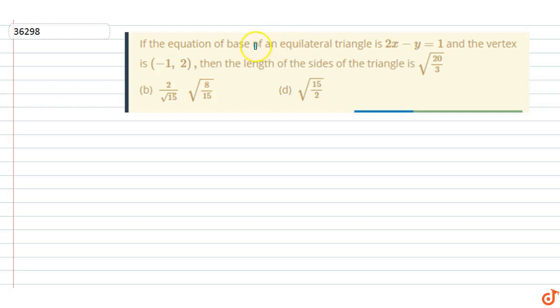The question given is: if the equation of the base of an equilateral triangle is 2x minus y equals 1, and the vertex is (-1, 2), then the length of the sides of the triangle is...